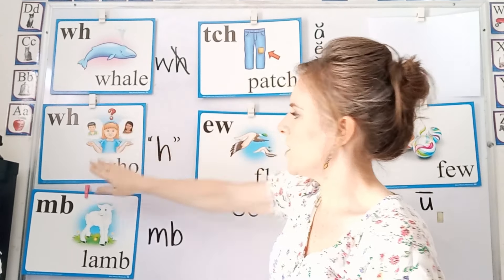Then we have the two EW special sounds. This is the OO in flew — it makes the OO sound as in tooth, but it's spelled EW. We have grew, do, blue, knew, drew, chew. These are the EW special sounds that say OO as in flew.